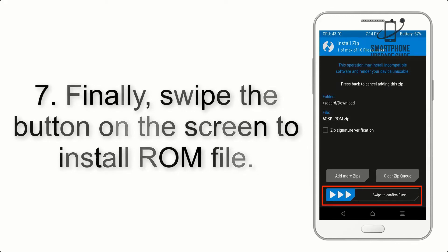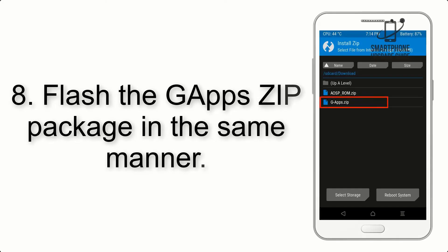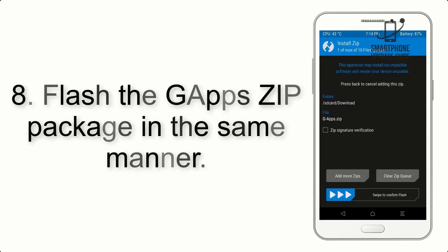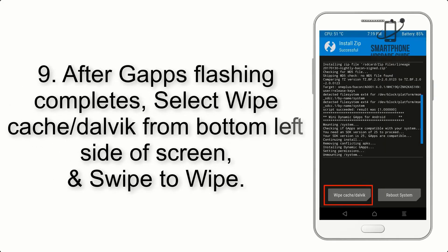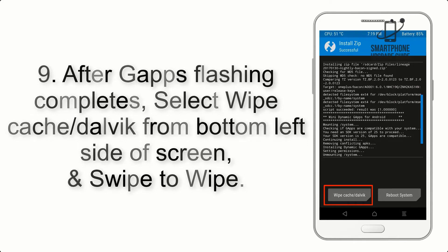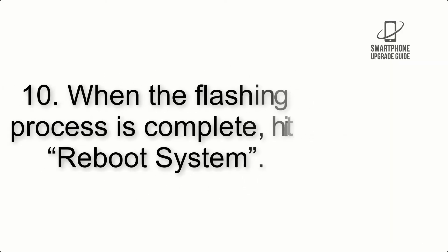Step 7: Swipe the button on the screen to install the ROM file. Step 8: Flash the GApps zip package in the same manner. Step 9: After GApps flashing completes, select Wipe Cache and Dalvik from the bottom left side of the screen and swipe to wipe.